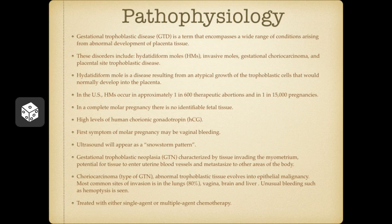Choriocarcinoma develops when abnormal trophoblastic tissue evolves into an epithelial malignancy, and this occurs in 1 in 20,000 to 40,000 pregnancies. There is a high incidence of vascular invasion with a resultant high risk of early systemic metastasis. The most common sites of metastasis are the lungs in 80% of cases, as well as the vagina, brain, and liver.